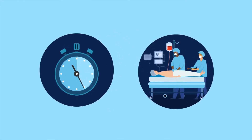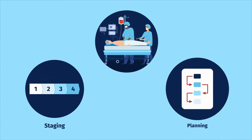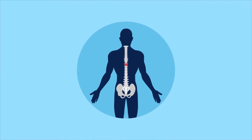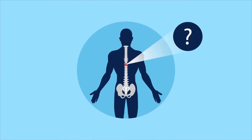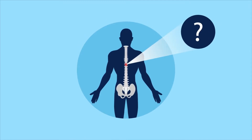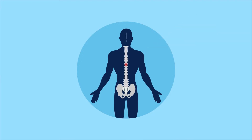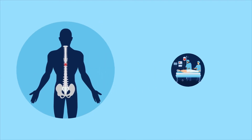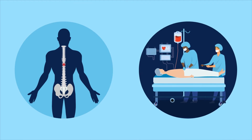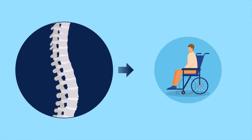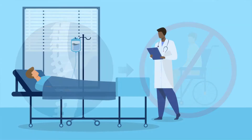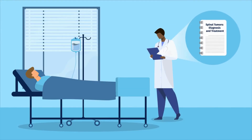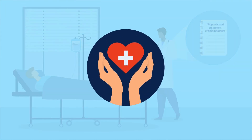When surgery is needed, it is usually performed only after there has been appropriate staging and planning. However, in rare cases, a patient with an unknown primary tumor causing spinal cord compression may undergo rapid neurological decline and need a decompression surgery before a formal diagnosis is made, in order to avoid complete paralysis. These key recommendations can help surgeons adopt a multidisciplinary approach to treat spinal tumors and improve the quality of care.